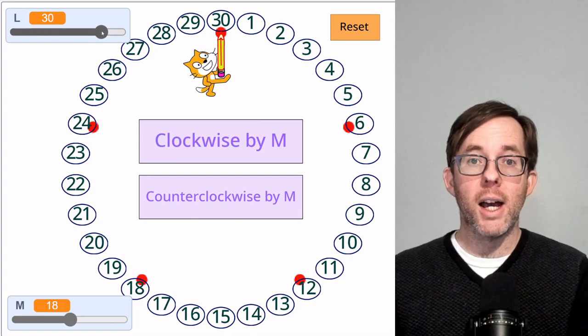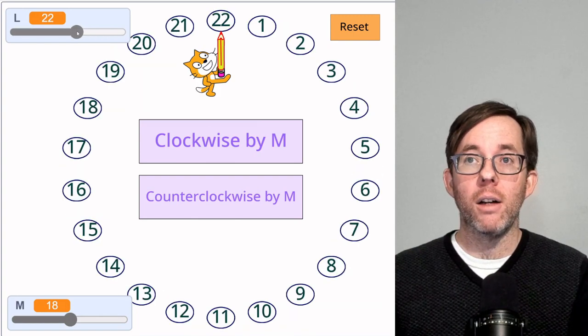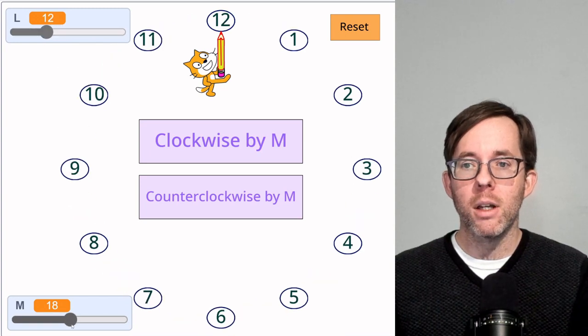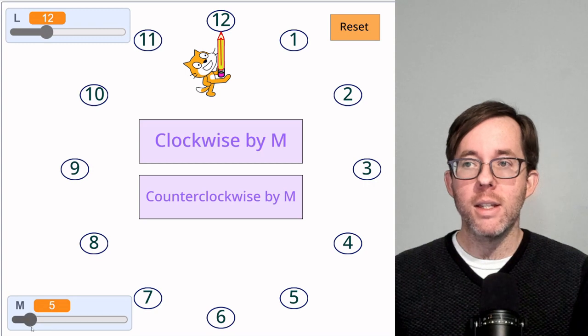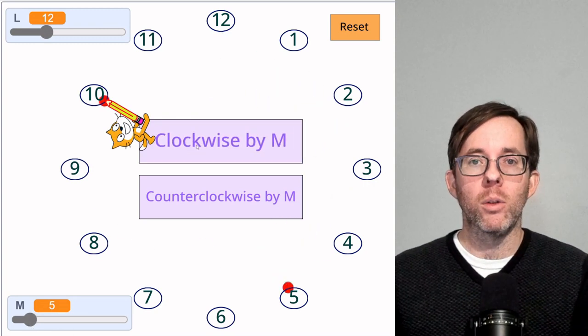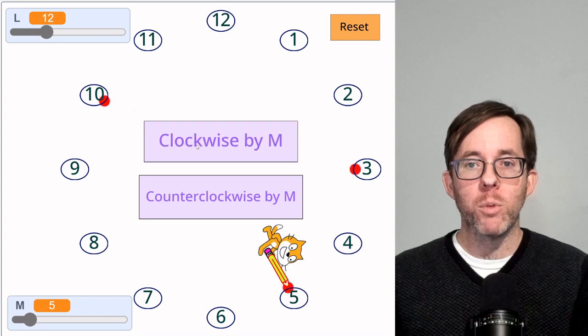So you hit all the times exactly when the gcd of l and m is exactly 1. Just like in our original example, where l was 12 and m was 5.